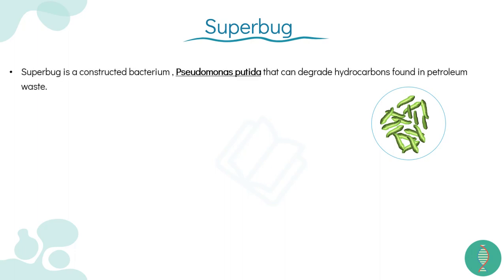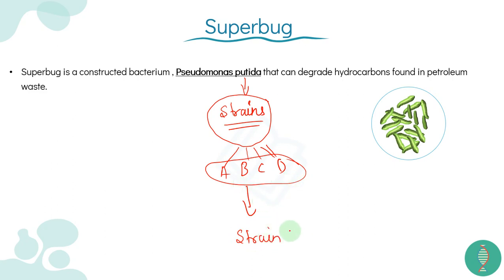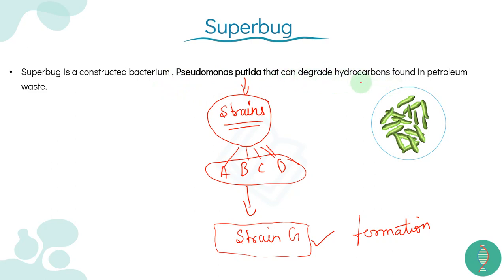Super bug is a constructed bacterium which we constructed from Pseudomonas putida. We have a lot of strains, and those strains have their own special functions. Super bug is a constructed bacterium taken from Pseudomonas putida that can degrade hydrocarbons found in petroleum waste.